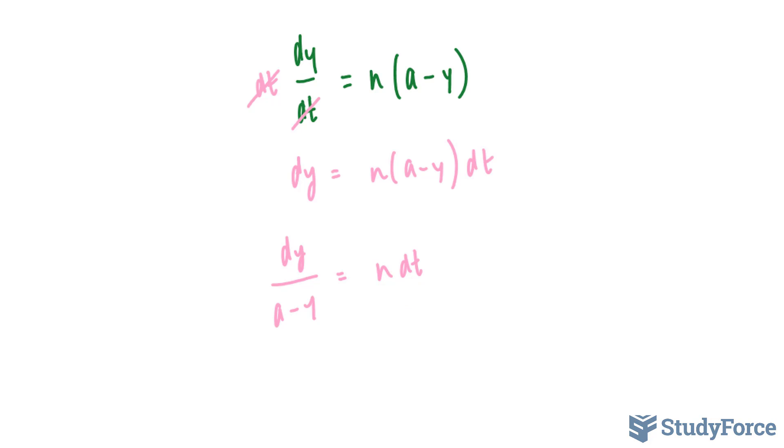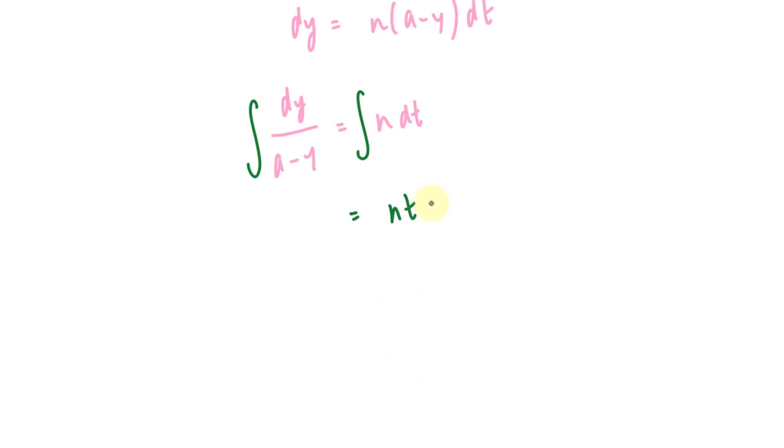If we integrate both sides, this side with respect to y and this side with respect to t, I end up with nt on the right side, plus our constant c. And on the left side, we have to do a substitution where I set u is equal to a minus y.